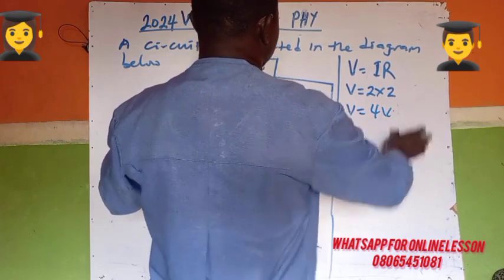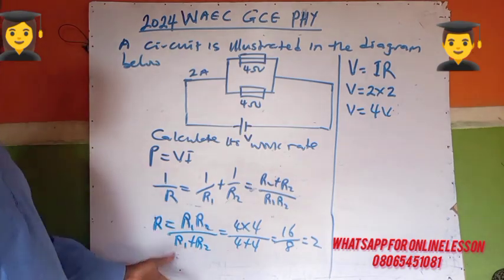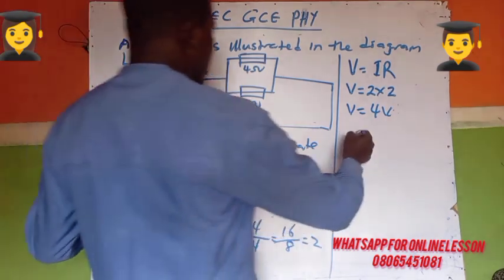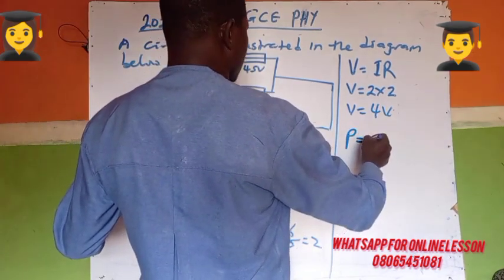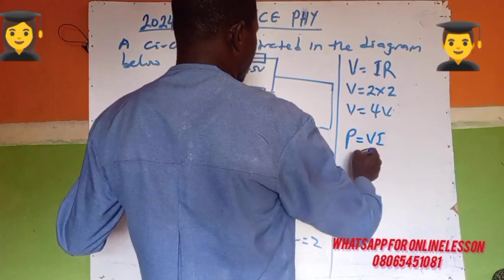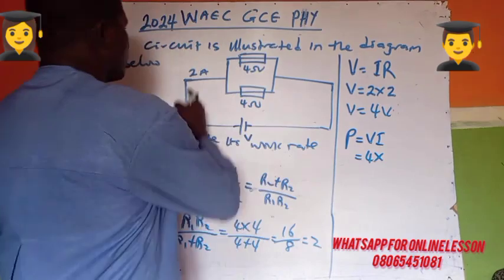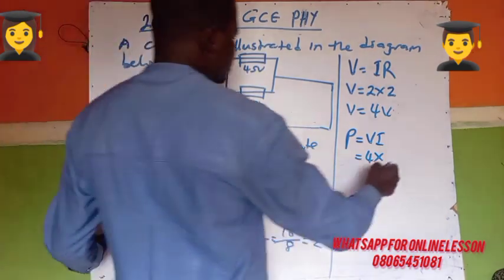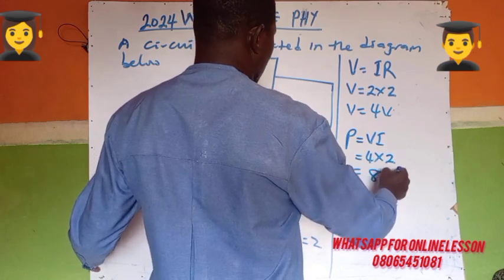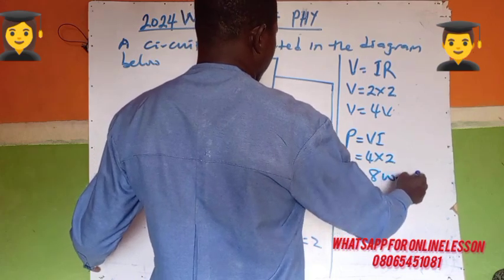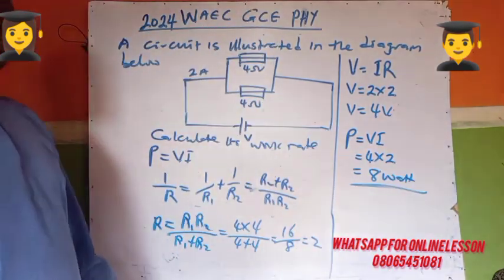So you have 4 volts. Then you calculate power, which is V times I. Your answer is 4 times 2, which gives 8 watts. That's the answer.